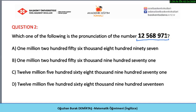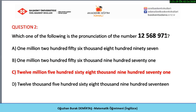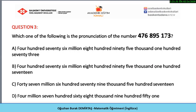Please stop the video to answer the question. Write the pronunciation of the number and then compare your answer with the correct answer. The correct answer will be given in five seconds. The correct answer is C: twelve million, five hundred sixty-eight thousand, nine hundred seventy-one.